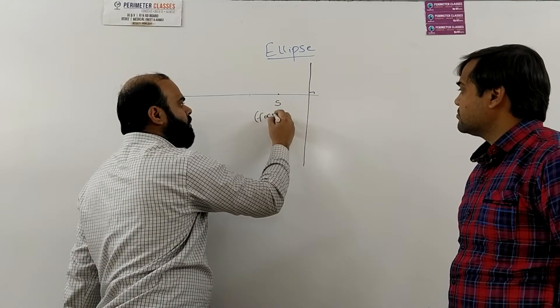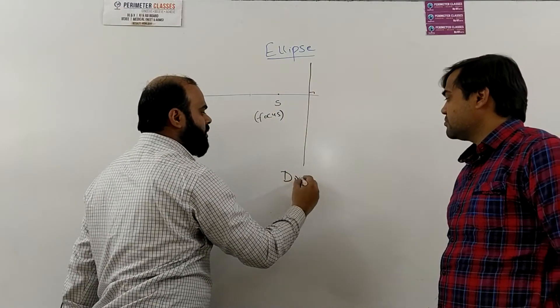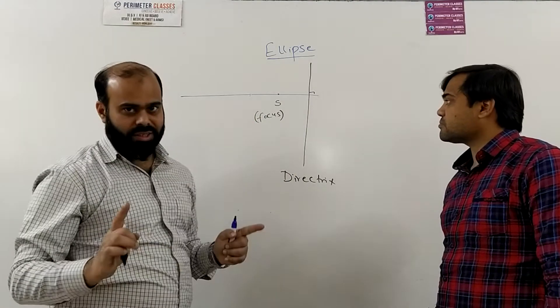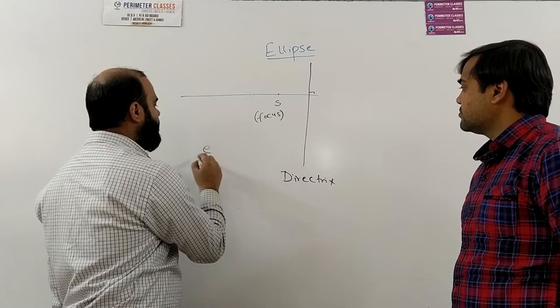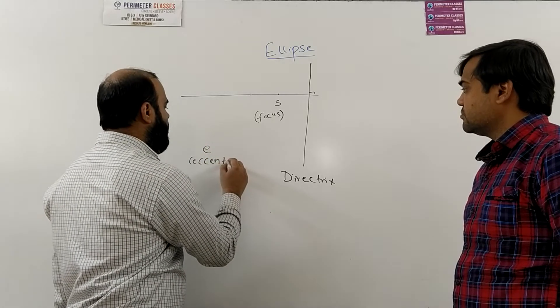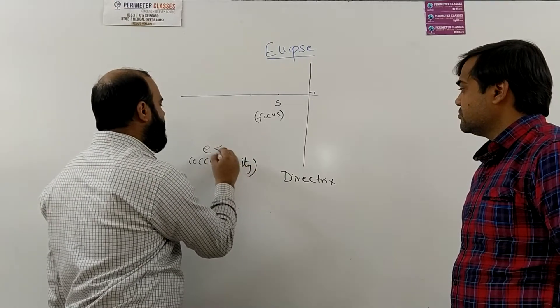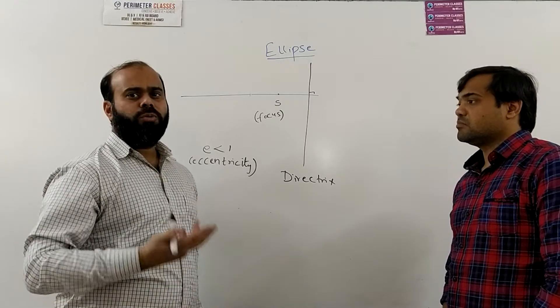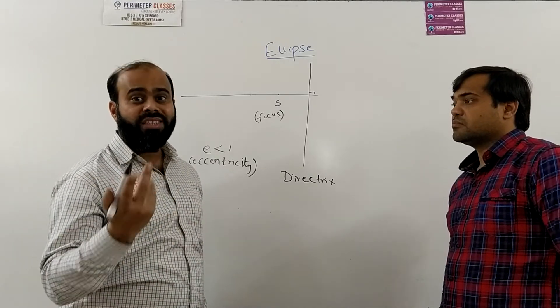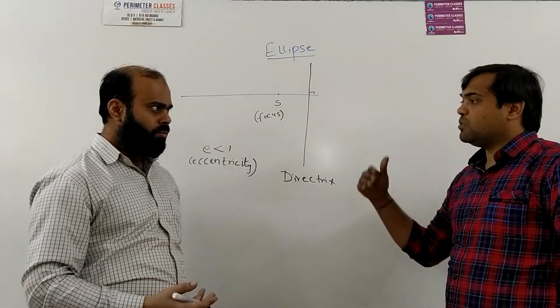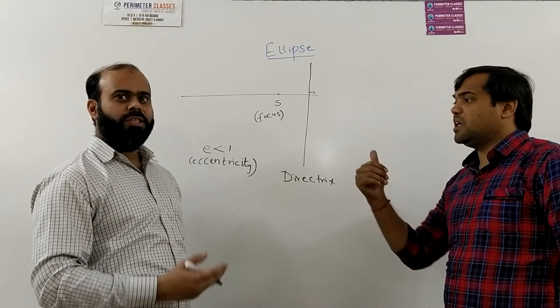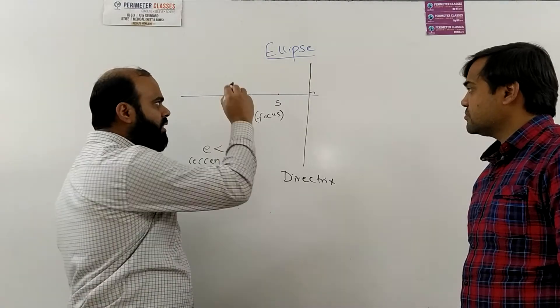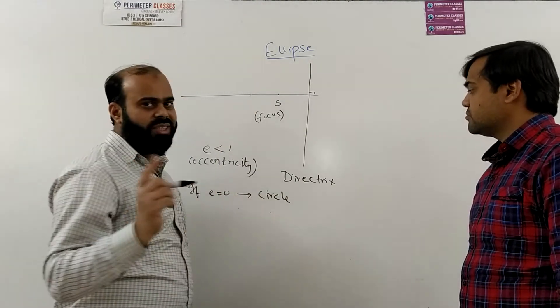This point is called focus and this line is called directrix. Now for ellipse you need to know these two things and one more thing which is called eccentricity, which is in short written as e, and for ellipse eccentricity is always less than 1. It can have any values 0.6, 0.7, 0.75, 0.99 or 0.2. Basically it is always positive so it lies between 0 and 1. And if eccentricity becomes 0 then this ellipse becomes a circle which is a specific case.